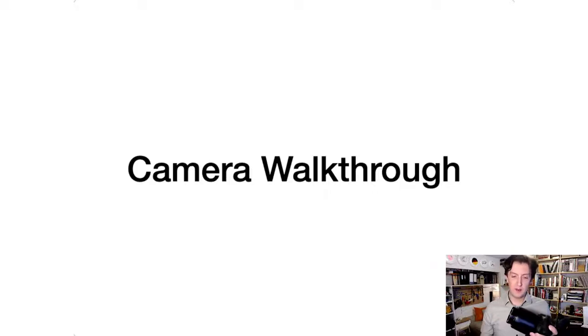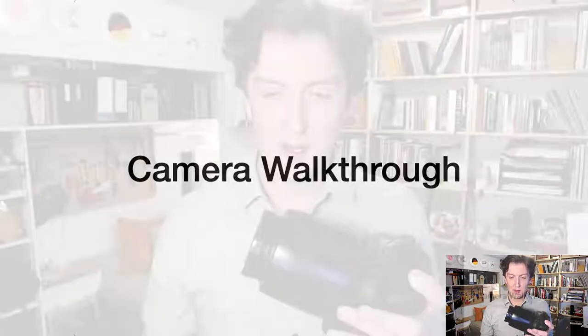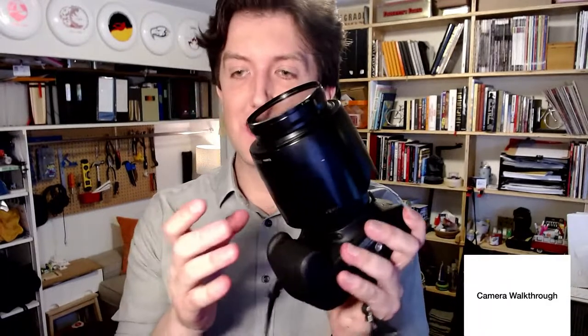On the lens itself there are two rings — the focusing ring and the zoom ring. Sometimes cameras switch the positions of these, so check yours. On the left hand side there's an AF and MF button — autofocus and manual focus — which controls whether the camera does the heavy lifting of making things sharp or you do. When you put the lens hood on correctly, make sure the orientation is right — there are two dots to help you line it up.